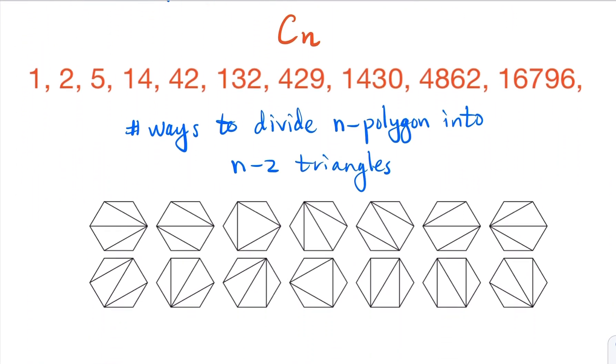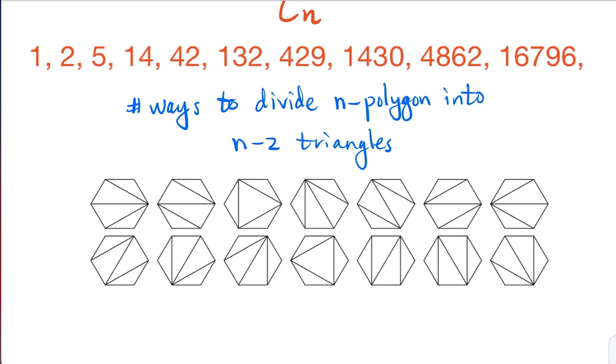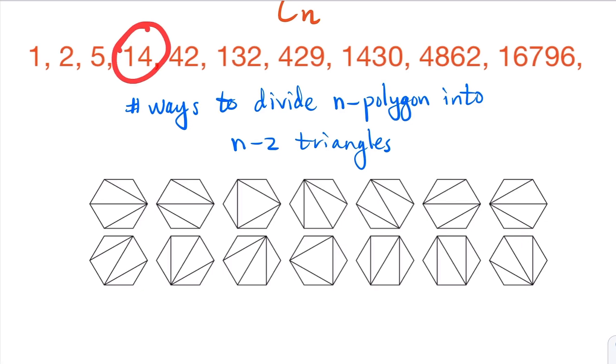And another problem is, for this hexagon here, how many ways can you divide it into four different triangles? It turns out to be 14 of them. In other words, the answer is also C4.